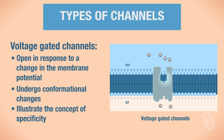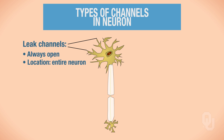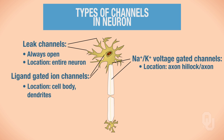Let's look at where these channels are located on the neuron. Leaked channels are always open and located along the plasma membrane of the entire neuron—in the dendrites, cell body, axon, and axon terminal. Ligand-gated channels are found primarily on the cell body and the dendrites. Sodium and potassium voltage-gated channels are located at the axon hillock and along the axon, with a higher concentration at the axon hillock.